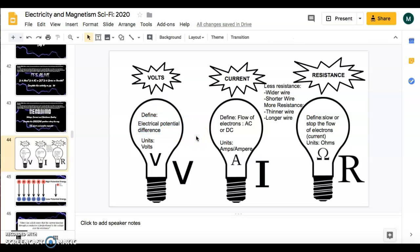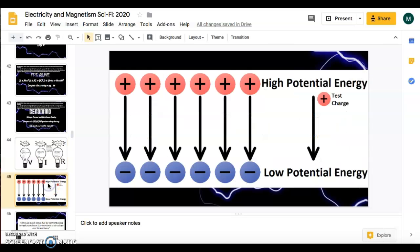But it's actually what we call the electrical potential difference. Now that makes absolutely no sense, and I get that. But if we think about it like this, like charges don't want to be near each other.